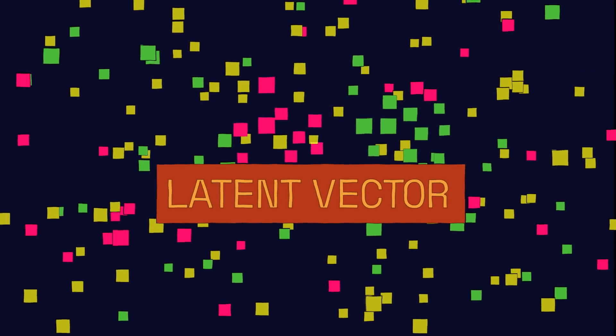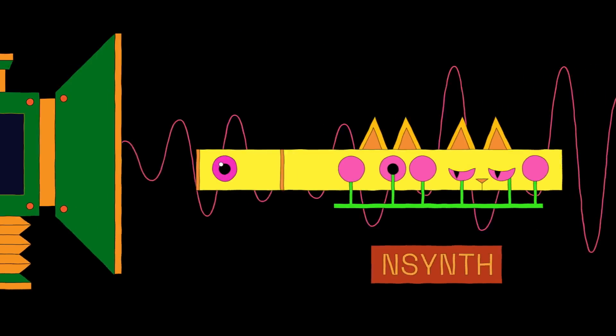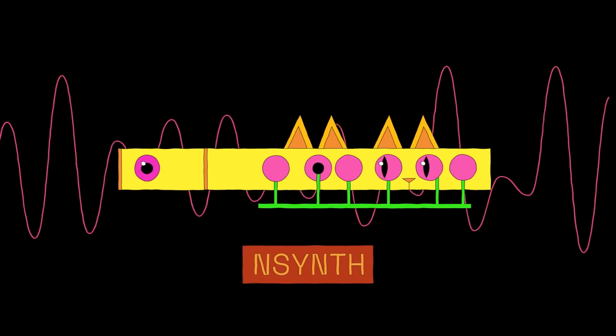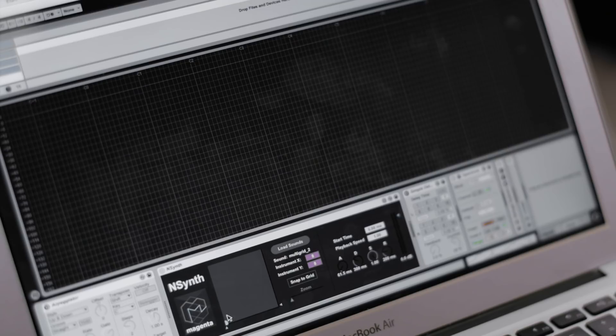If you add the numbers from the latent vectors together, instead of getting two separate sounds, you get a flute that meows. This is not just a combination of the original cat and flute audio files — it's NSynth completely reinterpreting them based on its knowledge of all the different musical instruments and notes it was trained on. It's mixing the features rather than mixing the actual audio form itself.